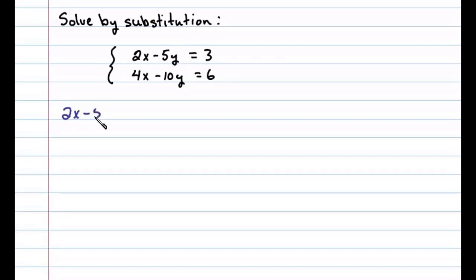We have 2x minus 5y equals 3. We'll begin by subtracting 2x on both sides. That'll leave us with negative 5y equals negative 2x plus 3.